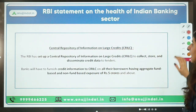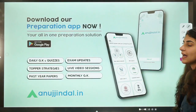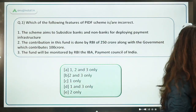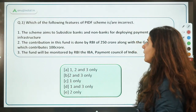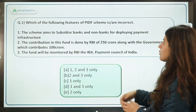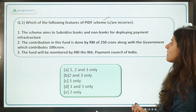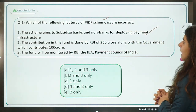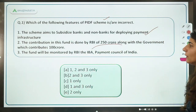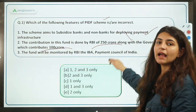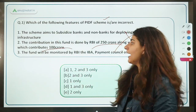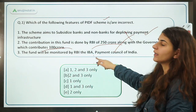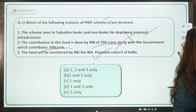Now let's go through today's practice questions. First: which of the following features of the PIDF scheme is incorrect? Option: 'The contribution to this fund is made by RBI of 250 crore along with the government which contributes 100 crore.' This is incorrect — the 100 crore contribution is from card-issuing banks and card networks, not the government. The option about monitoring by RBI, IBA, and Payment Council of India is correct.